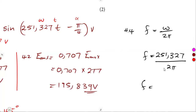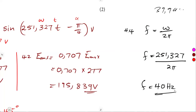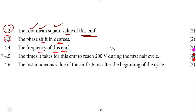251,327 divided by 2 pi gives us approximately 39.999, which rounds to 40 hertz. Then another question was to calculate the times — meaning we need two possible values.